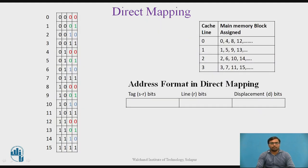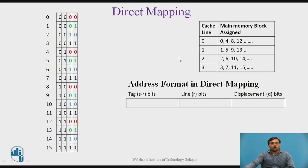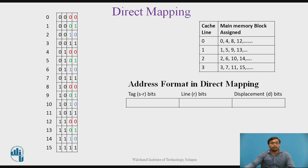Here we can see how direct mapping takes place. There are cache lines 0, 1, 2, 3, and totally there are 64 memory words. The mapping technique defines which block of main memory will be mapped to which cache line. In the direct mapping technique, those blocks from main memory are mapped in a round-robin manner. There are only 4 cache lines, 0 through 3, but there are totally 64 memory words in main memory.